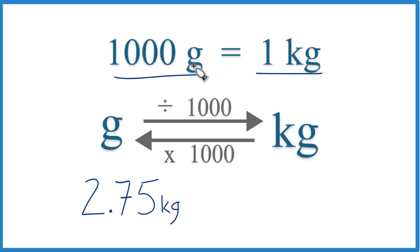When we're going from grams to kilograms or kilograms to grams, we'll use the conversion factor. In this case, we have 2.75 kilograms and we want grams. So kilograms to grams, we multiply by 1,000 like this.